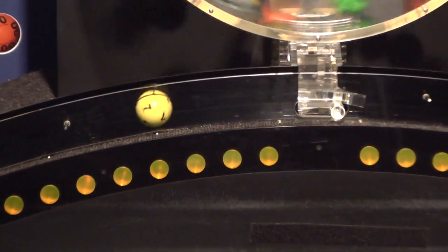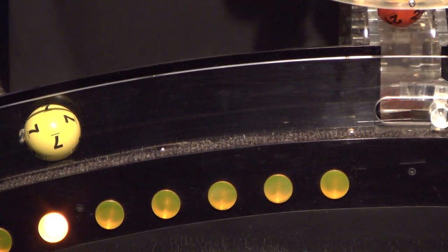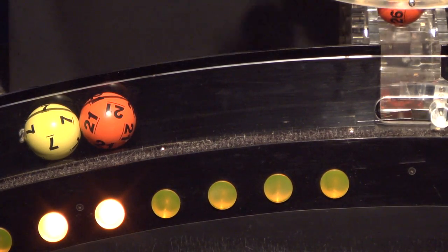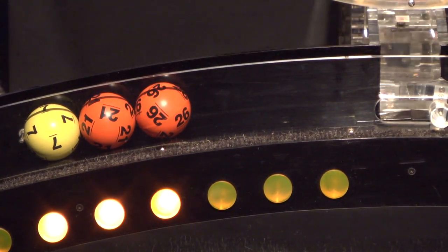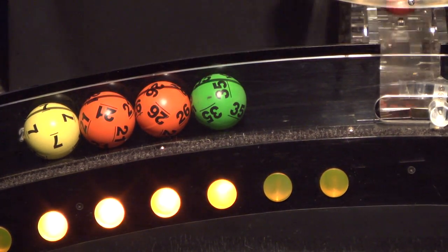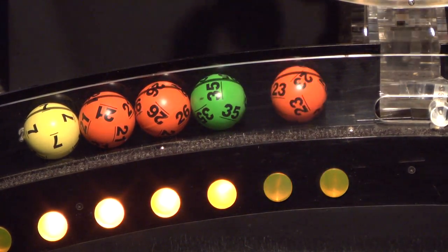Our first number up is number 7 and after that we have number 21 and rolling right behind that is number 26 and here comes number 35 and the final ball in this sequence is number 23.